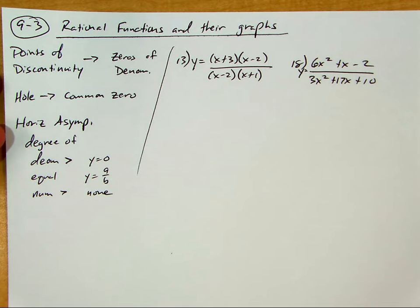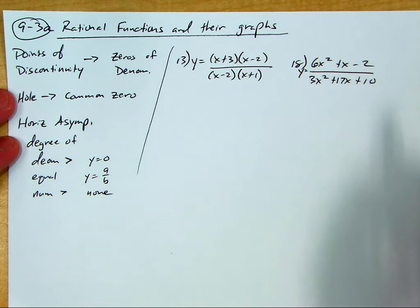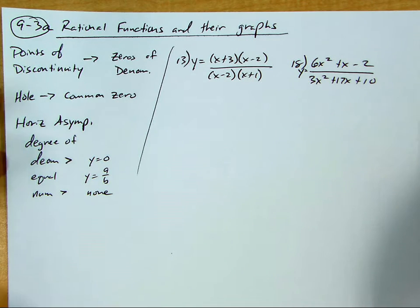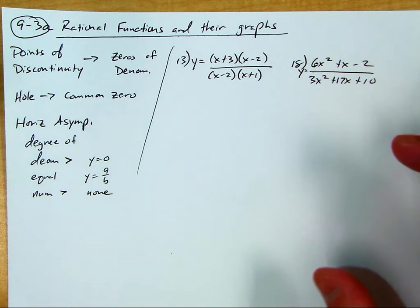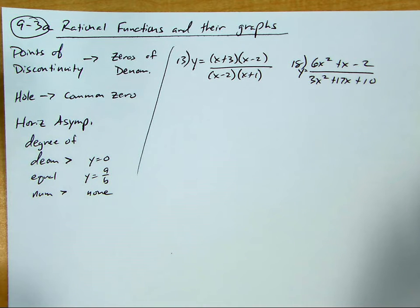Okay, here's a little extra help on 9-3, the first part, 9-3a, rational functions and their graphs. We've got to be able to locate all the asymptotes before we can sketch the graph. So the first half of the lesson was all the factoring and locating the asymptotes, and then the second part we'll be trying to sketch the graph.